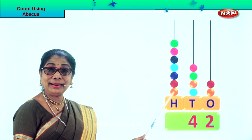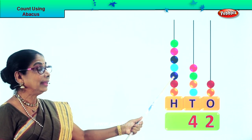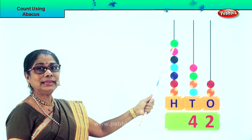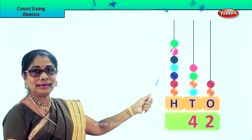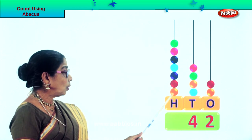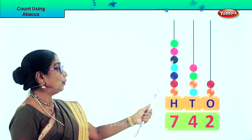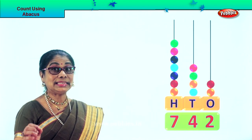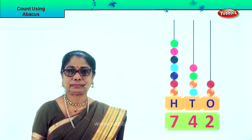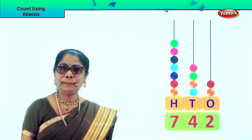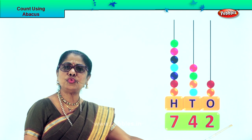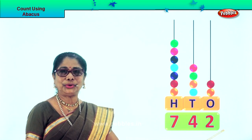Now we go to the 100s: 100, 200, 300, 400, 500, 600, 700. How many beads? 1, 2, 3, 4, 5, 6, 7 — each is 100. So we put down 7. Let's read the number: 742.